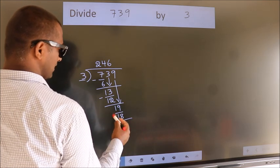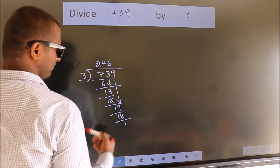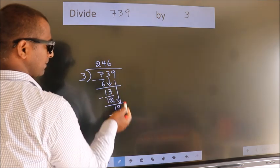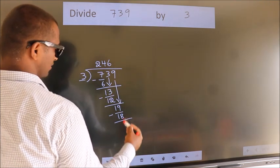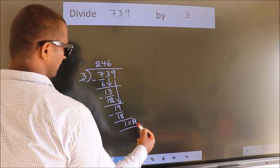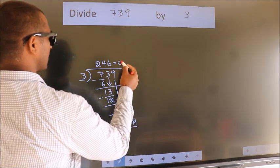Now, we subtract. We get 1. No more numbers to bring it down. So, we stop here. This is our remainder. This is our quotient.